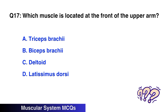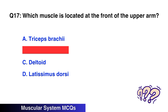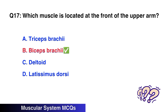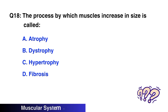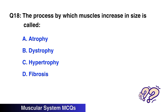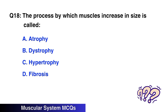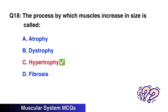Question No. 17: Which muscle is located at the front of the upper arm? The right option is B: Bicep Brachii. Question No. 18: The process by which muscles increase in size is called — the right option is C: Hypertrophy.